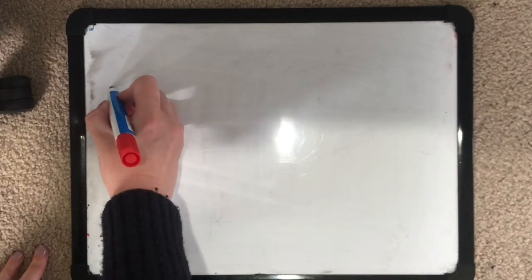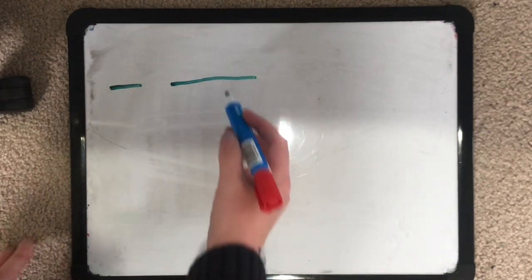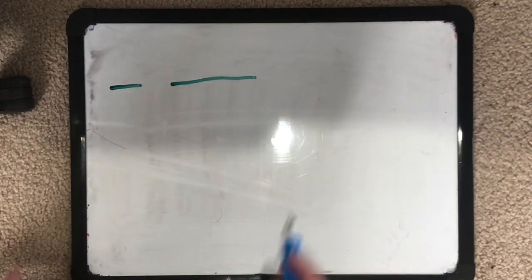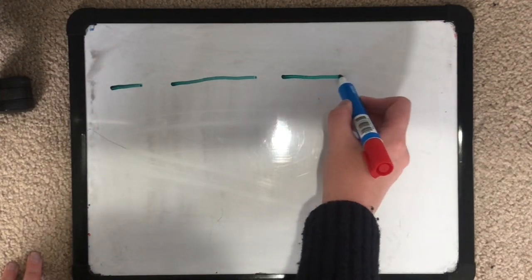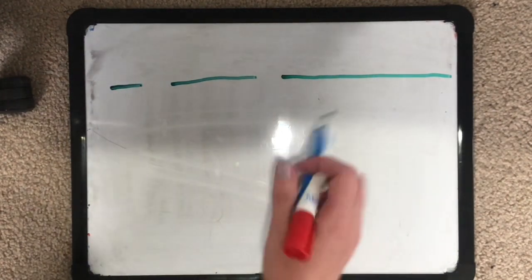Now I need to ask myself are my words short or long? I like walking my dog. Well I know that I, that's just one letter, so that's going to be a really short line. I like. Like is longer. I like walking. Walking's really long. So I like walking.